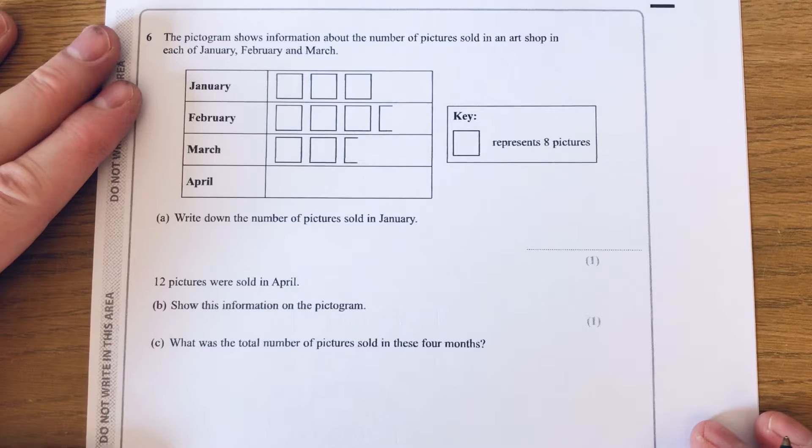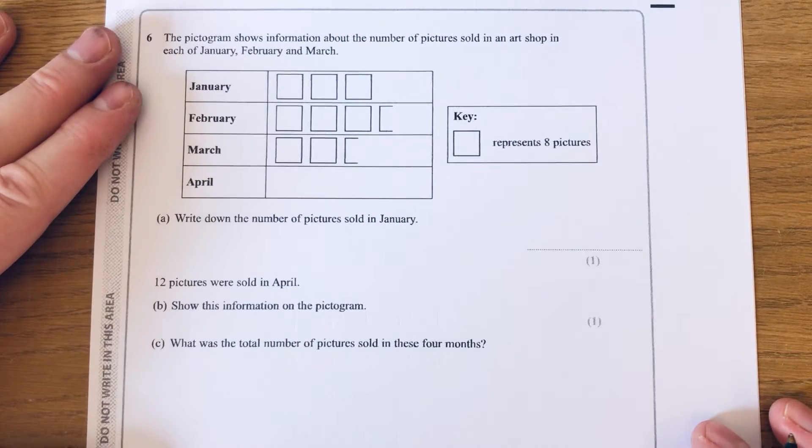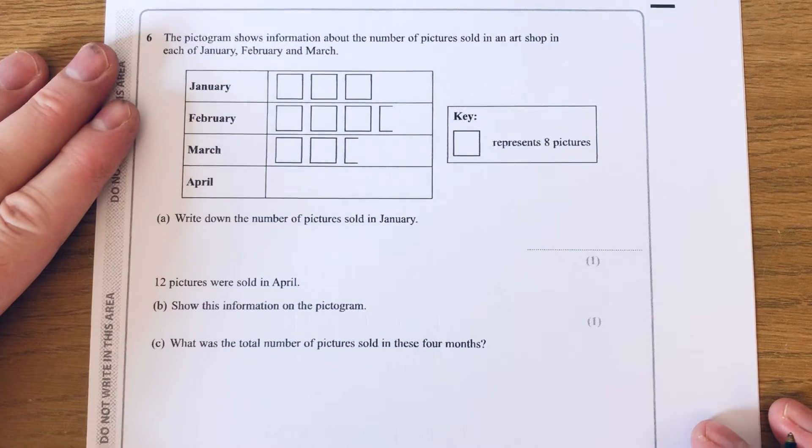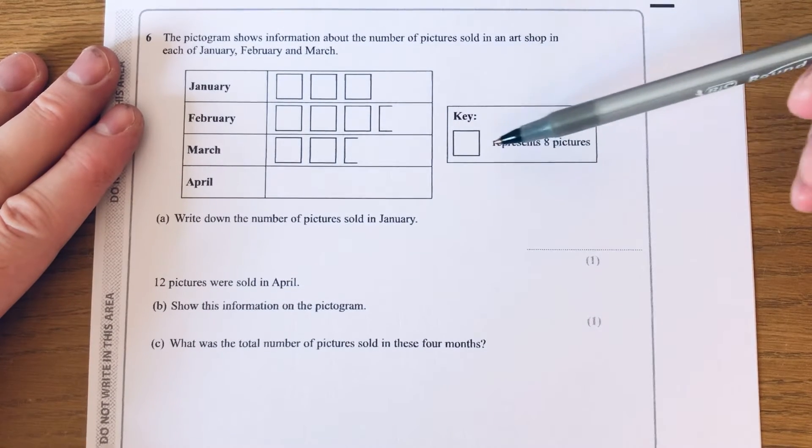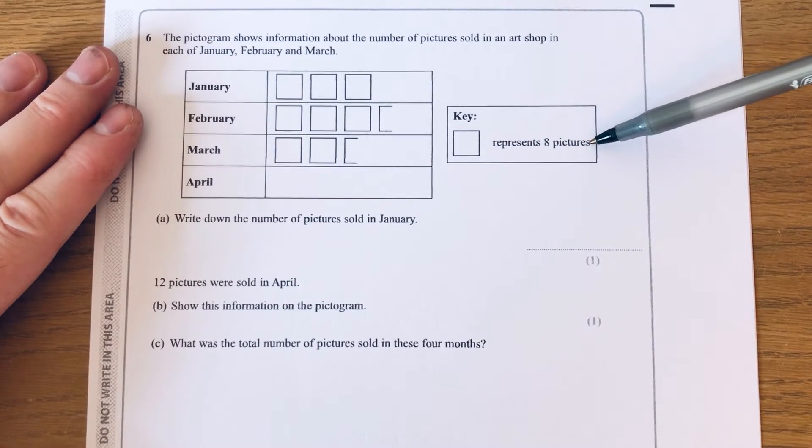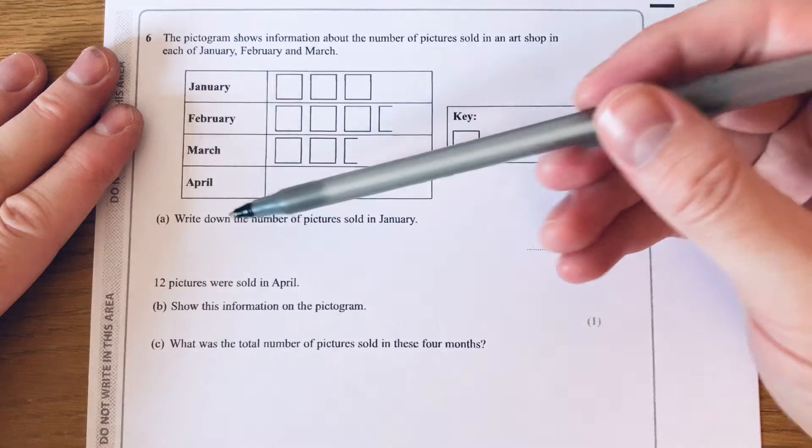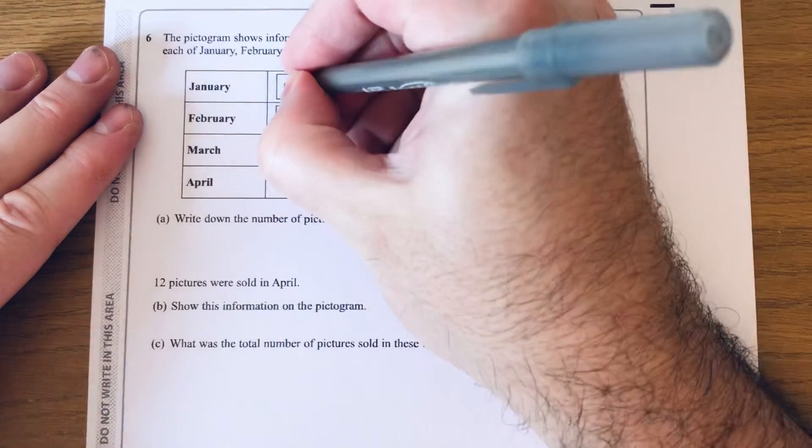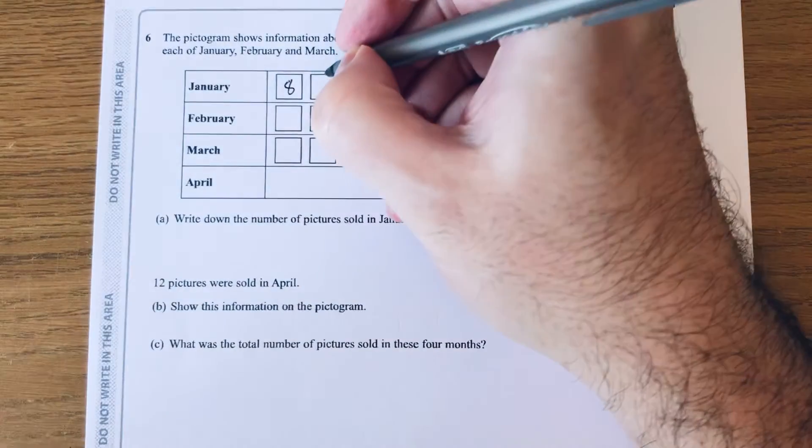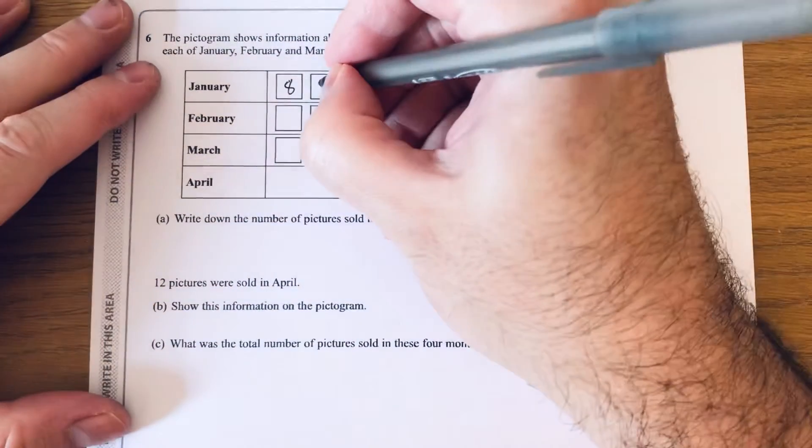Let's move on to our second exam question. The pictogram shows information about the number of pictures sold in an art shop in each of January, February, and March. Let's look at our key. The full box represents eight pictures.